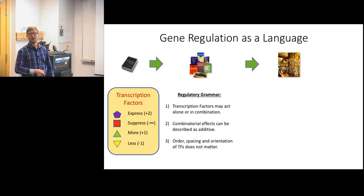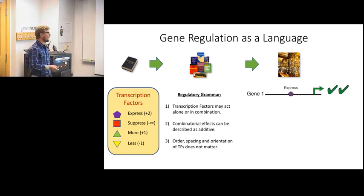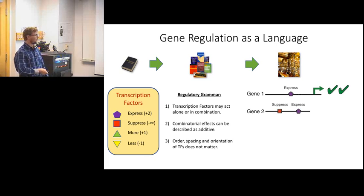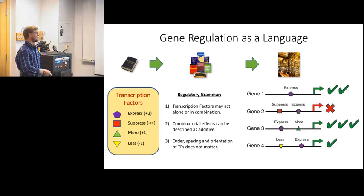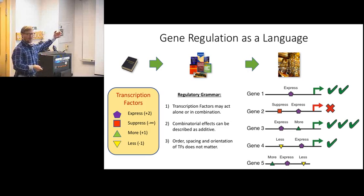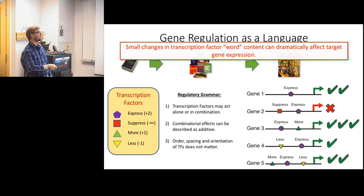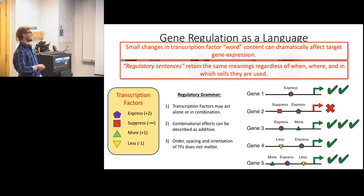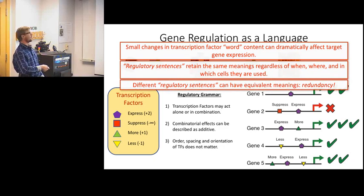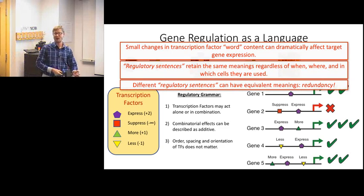Extending this to gene regulation: we start with transcription factors analogous to words, each with its own intrinsic meaning pertaining to target gene expression. We combine these into regulatory instructions following a regulatory grammar with simple rules based on real biology. For example, an express tag upstream of a target gene gives two units of expression; adding a suppress tag blocks expression; a more tag adds expression; a less tag reduces it. Different regulatory sentences can have equivalent meanings - there's redundancy built into this code, which turns out to be a very useful property.